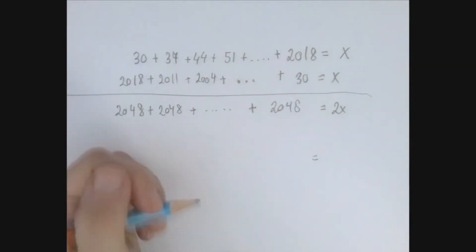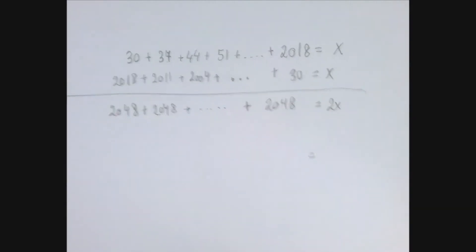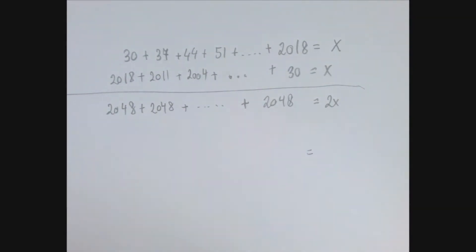So we already know that we're adding 2048 to itself many, many times. Well, that's just multiplication. The question that is increasingly difficult is how many columns are we dealing with? I'm going to show you two different methods. But first, here is what you should not do.